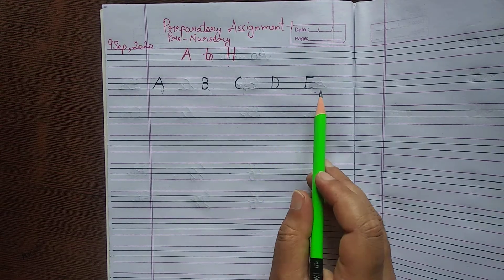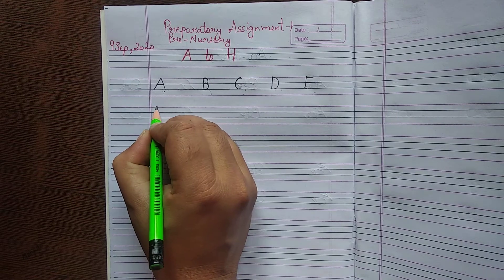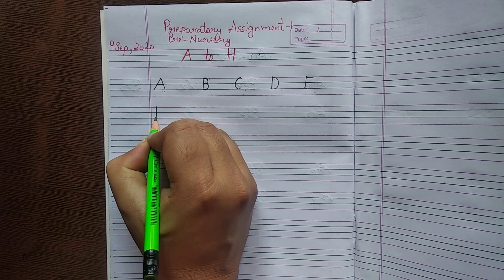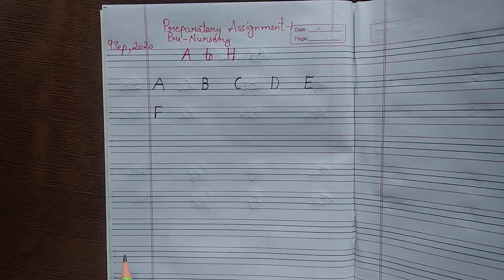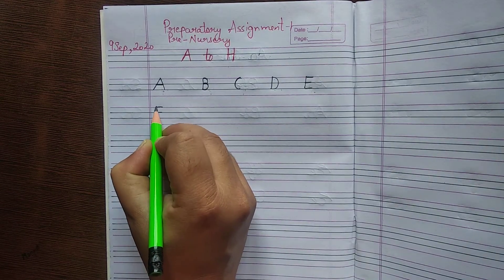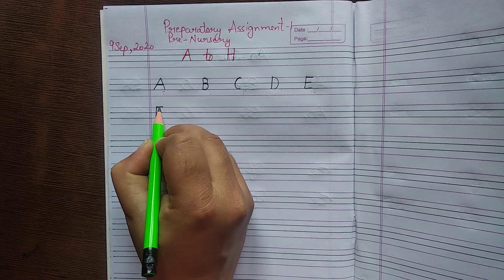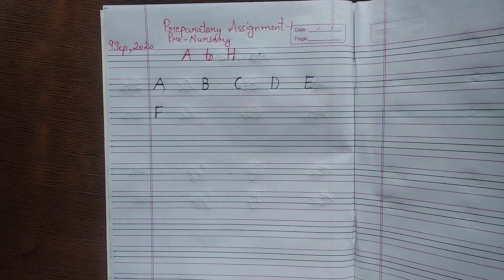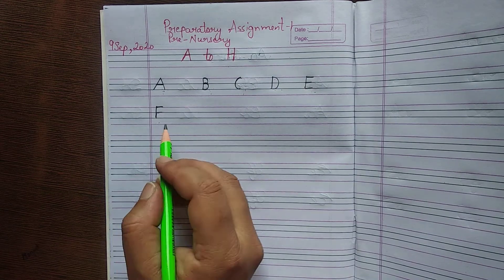Next, F for fish. Standing line, then a sleeping line at the top, then a sleeping line in the center. Okay students, F for fish.